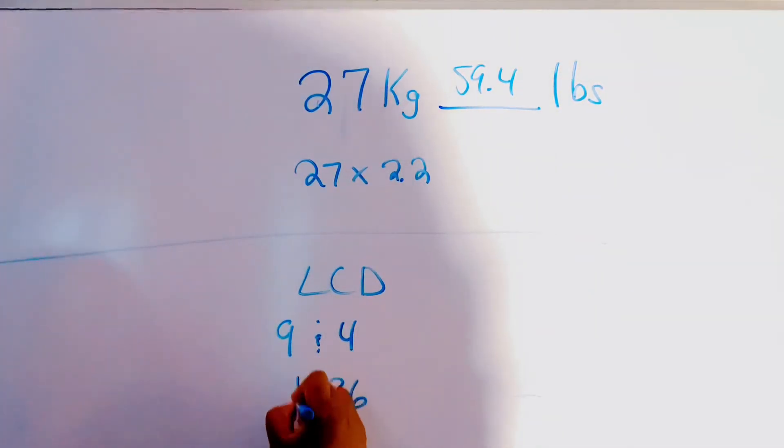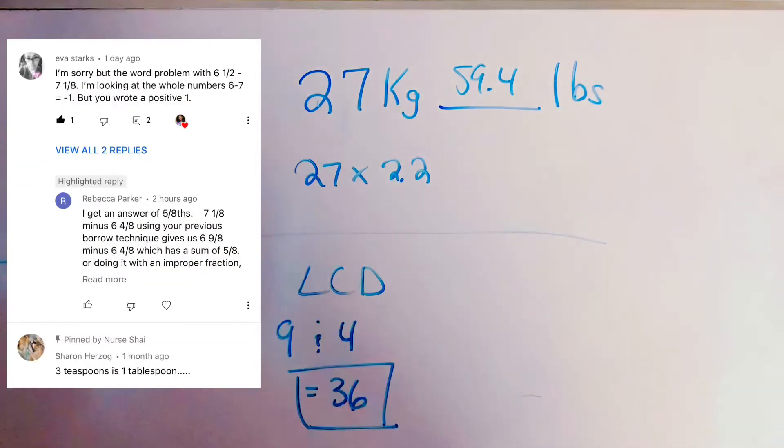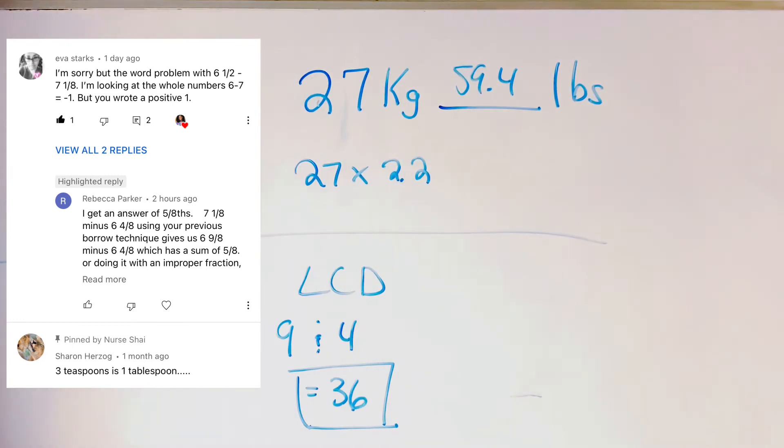One other thing I want to point out is that the LCD for 9 and 4 is going to be 36 because those are two factors. So yeah, any mistakes once again will be in the description box. Check that. And if you have noticed any mistakes, please be sure to comment down below and I'll make the updated version.